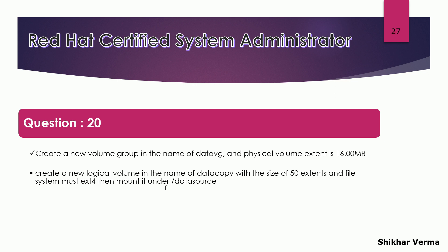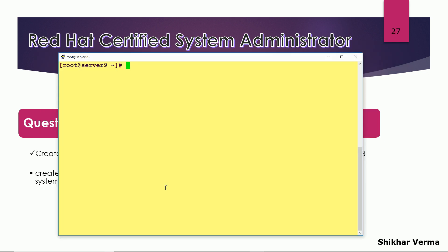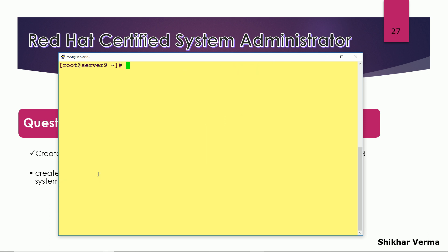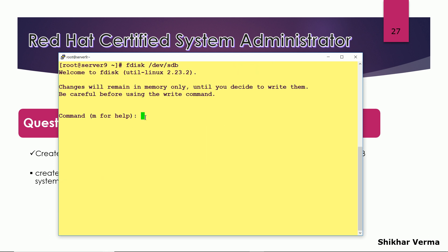Let me move to my VM and show you how we can do this. First of all, let me check the disk. I am going to create a single partition on that disk and use that single partition as a physical volume.